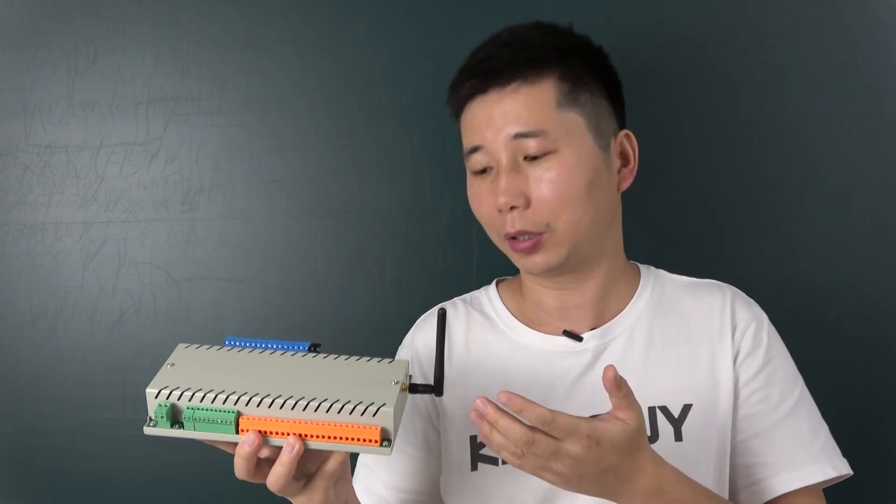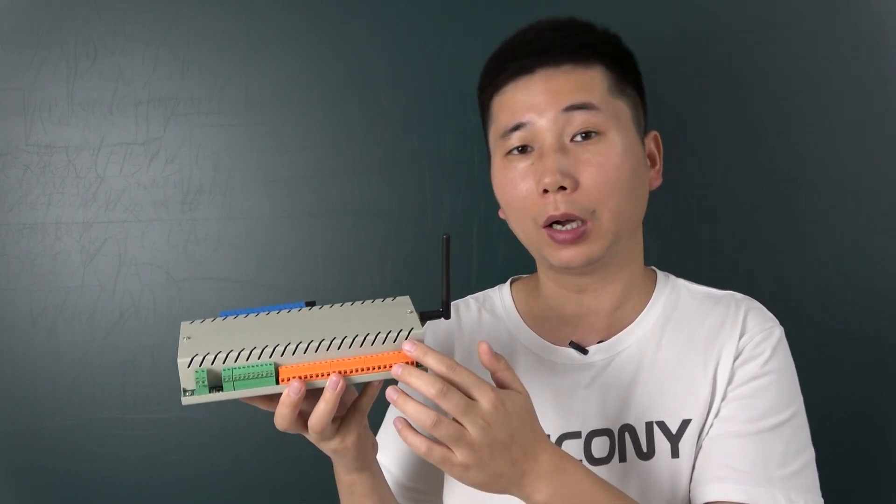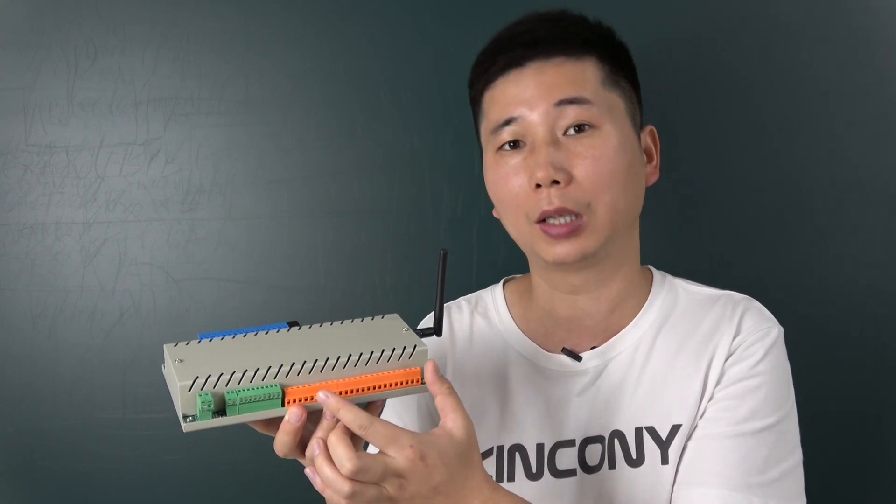So the function is the same as the COLB, but the COLBS will have 8-channel relay output, and every relay will have normal open and normal close and common.